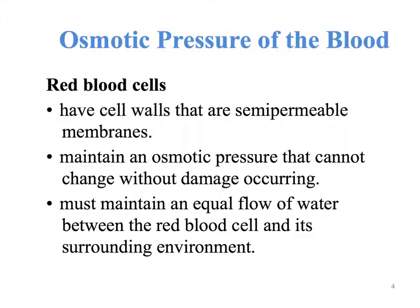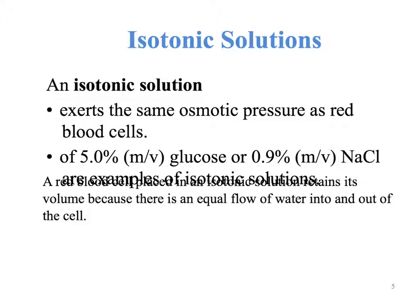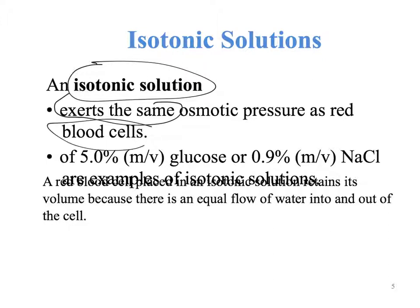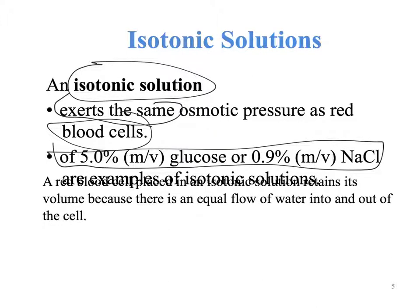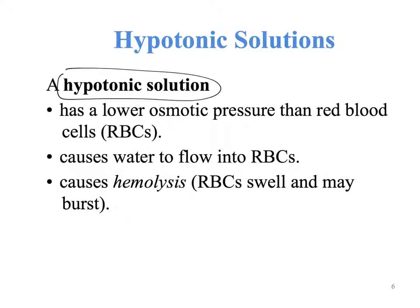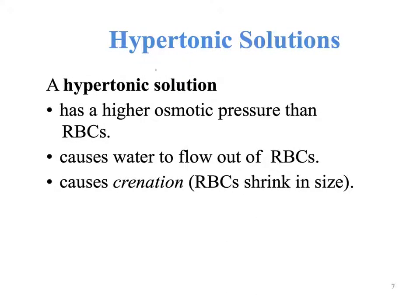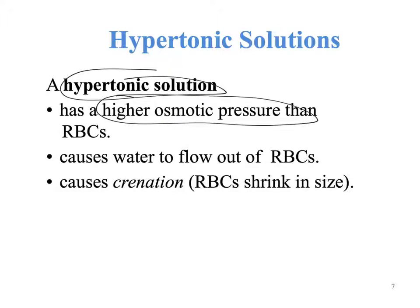This is important because we can apply this to red blood cells. They have walls that are semipermeable, and they maintain an osmotic pressure that cannot change without damage. We can have what is called isotonic solutions — solutions that have the same osmotic pressure as the red blood cells. Hypotonic solutions have lower osmotic pressure than the red blood cells. Hypertonic solutions have higher osmotic pressure than the red blood cells.